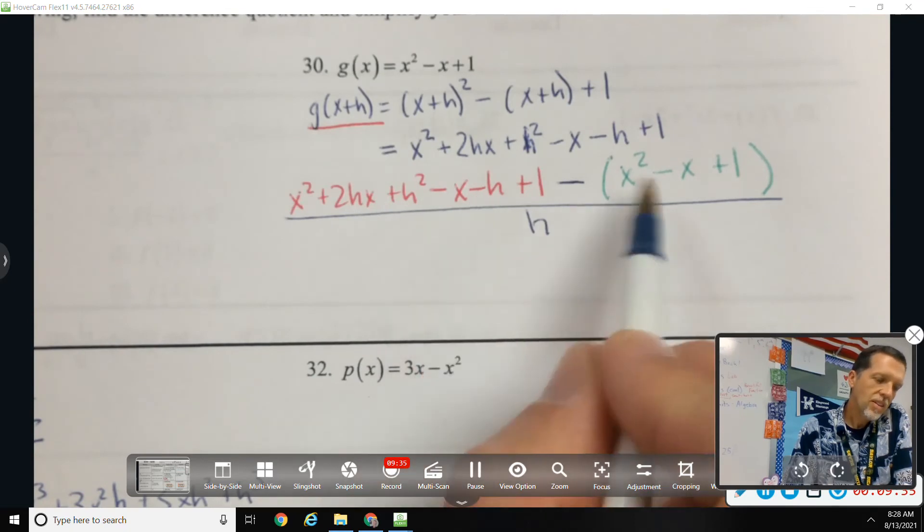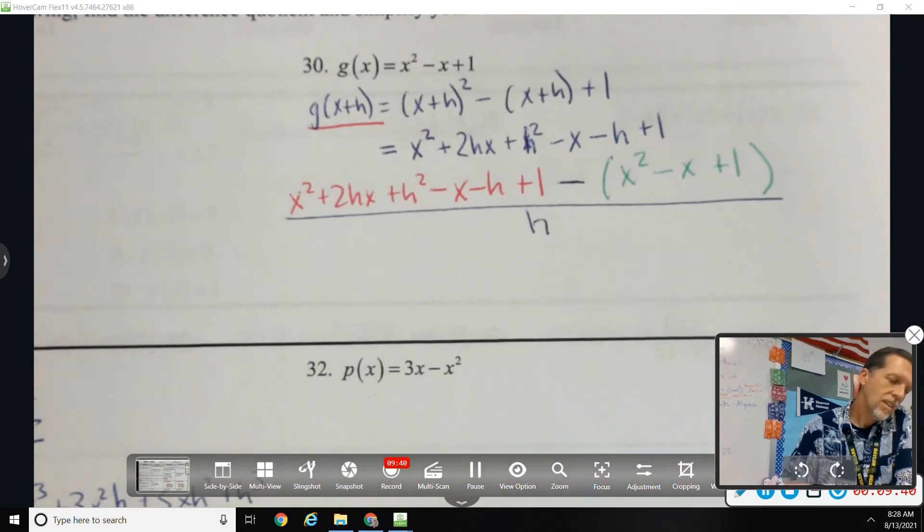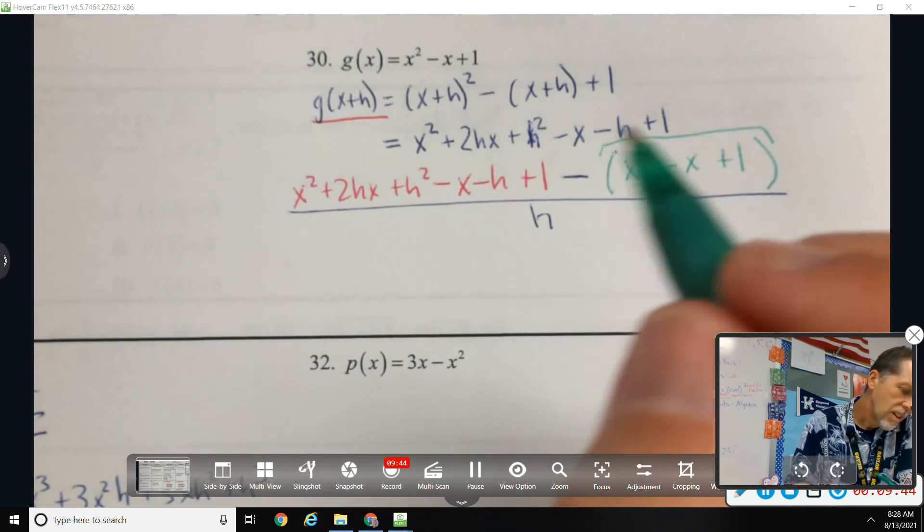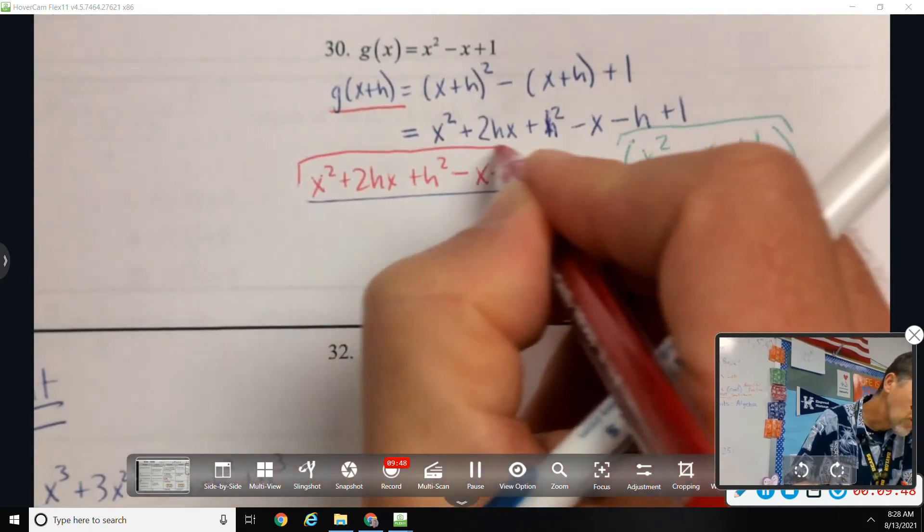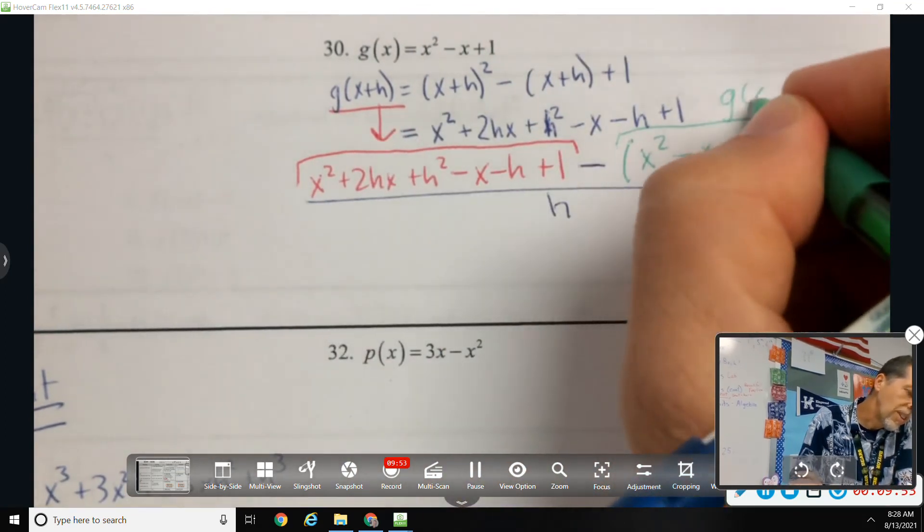And then the green part is f of x, maybe that's... So then the h is minus x minus h plus one. So all of this red is g of x plus h. Okay. And the green is g of x. Better? Yeah.